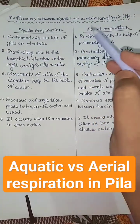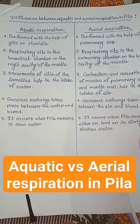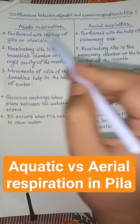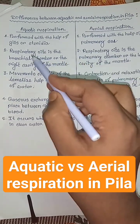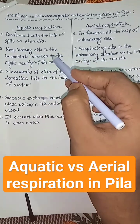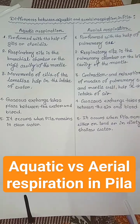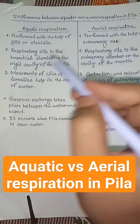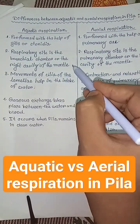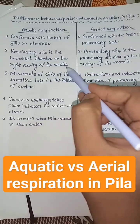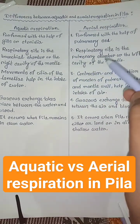Differences between aquatic and aerial respiration in Pila. Aquatic respiration is performed with the help of gills or tinidia, but aerial respiration is performed with the help of the pulmonary shell. The respiratory site in aquatic respiration is the branchial chamber, or the right cavity of the mantle.